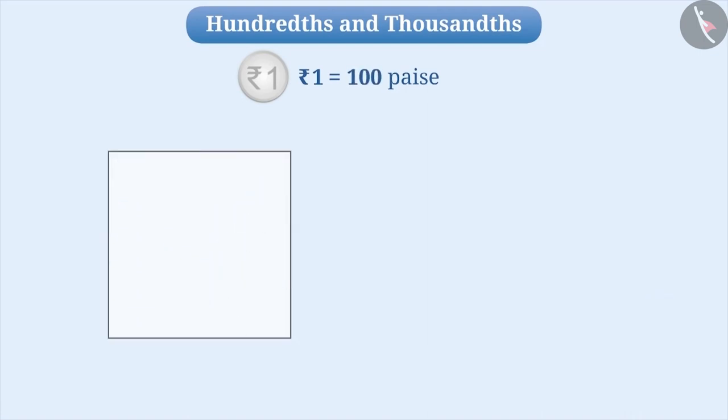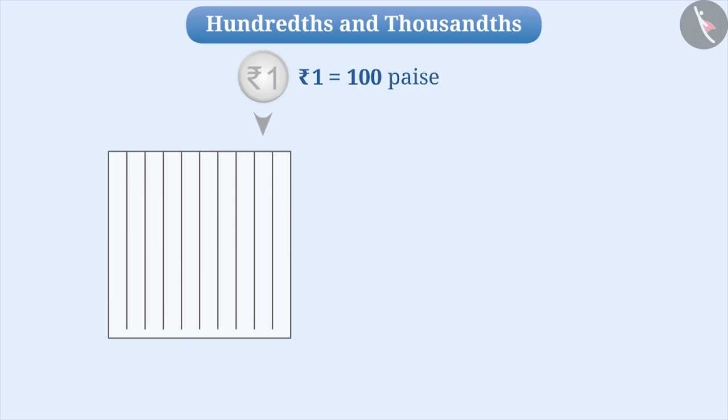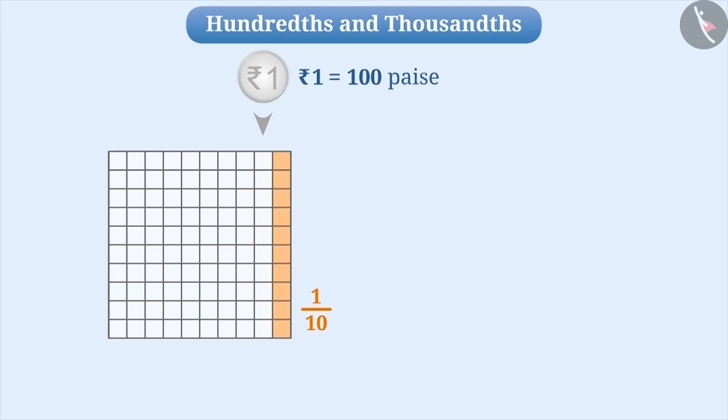Let us assume 1 whole square represents 1 rupee. If we divide the square into 10 equal parts, then each part will have 1 tenth. If we divide each of the tenths part into 10 equal parts, then we will get a total of 100 equal parts.